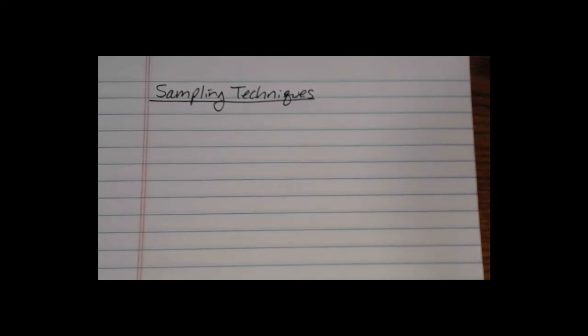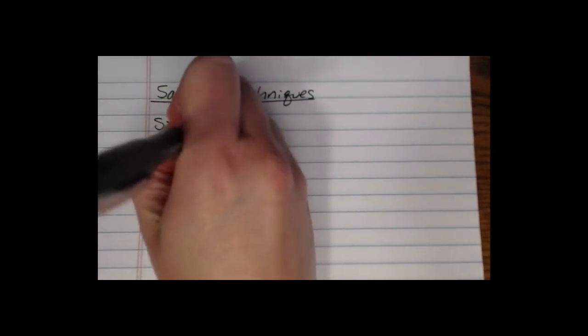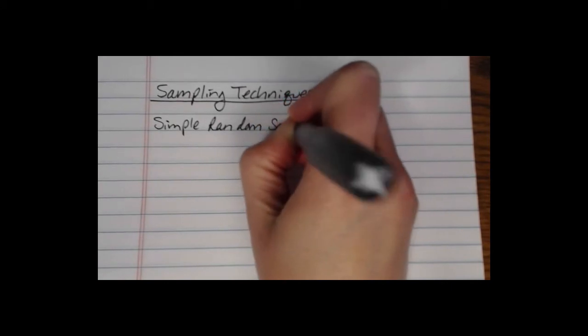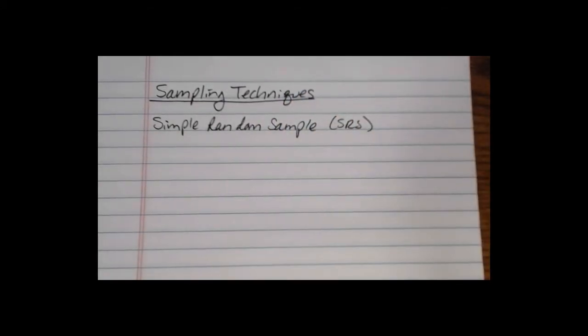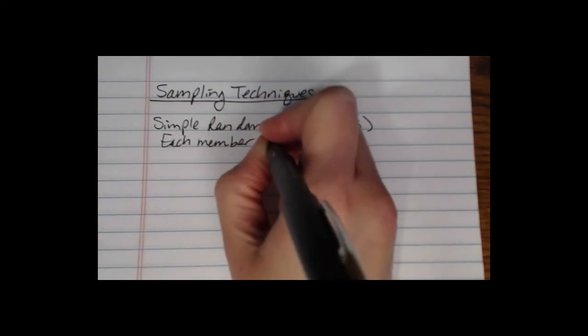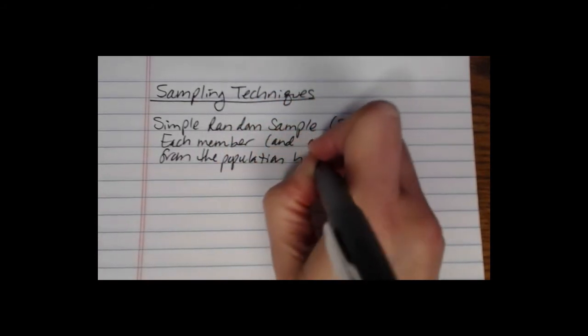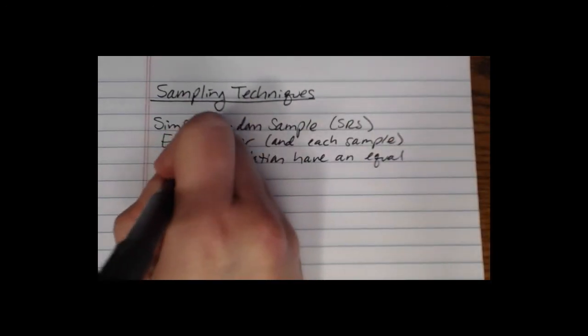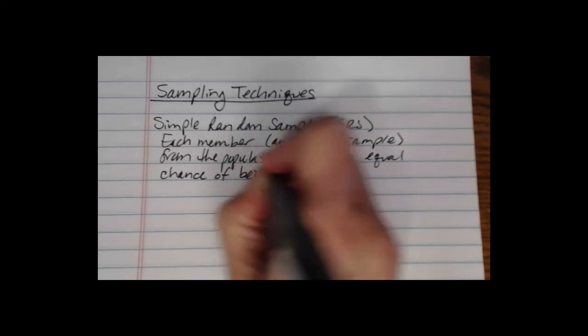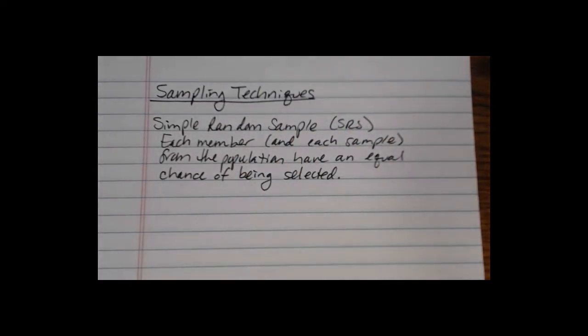The main gold standard in most research for sampling techniques is called a simple random sample. We'll be using this so much you'll frequently see me abbreviate it as SRS, simple random sample. The key features of a simple random sample are that each member and each sample from the population have an equal chance of being selected. That's the key with the simple random sample - everybody has to have an equal chance to be selected.